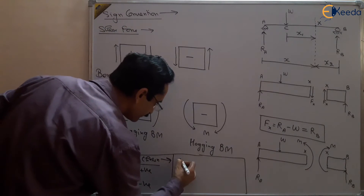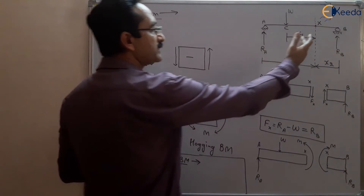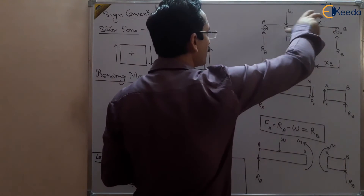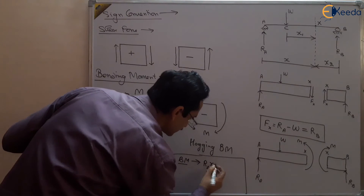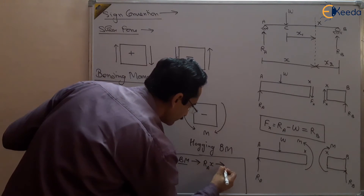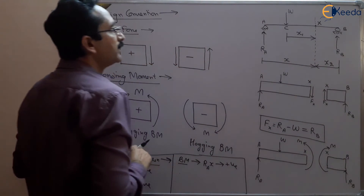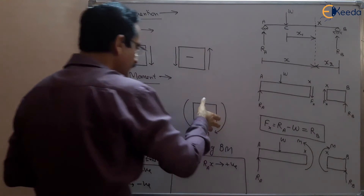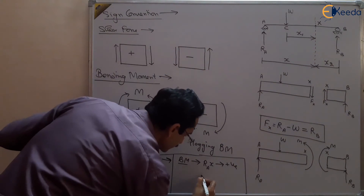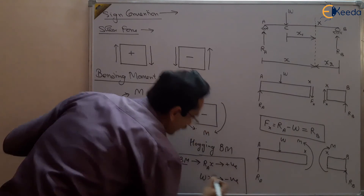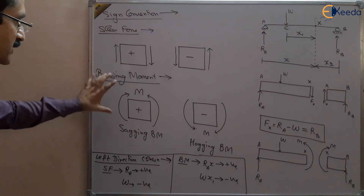For bending moment, Ra is in the leftward direction and making a clockwise couple — leftward clockwise is the sagging bending moment, so it is positive. Ra multiplied by x will be taken as positive bending moment. W is making an anticlockwise couple in the leftward direction, so W multiplied by the distance x1 will be taken as negative bending moment. This is how we do our calculation using the sign convention for shear force and bending moment.